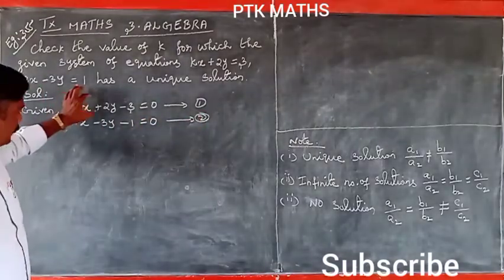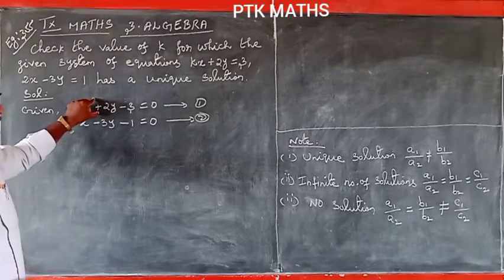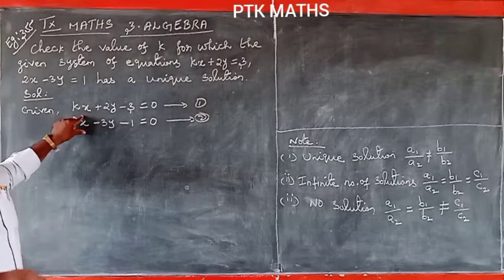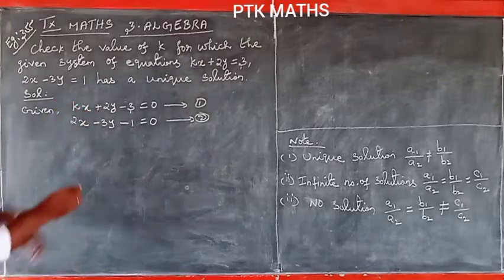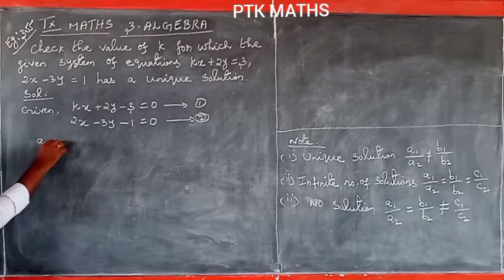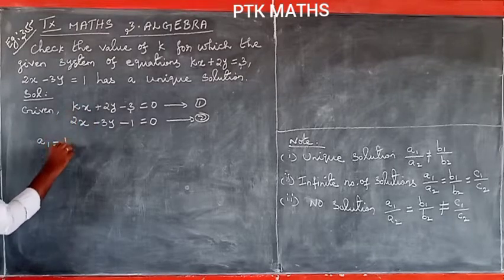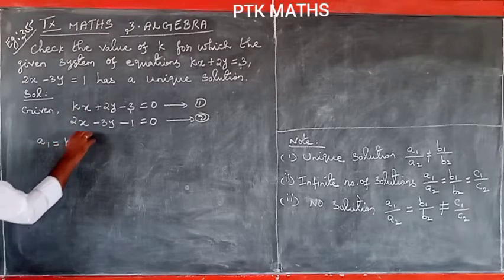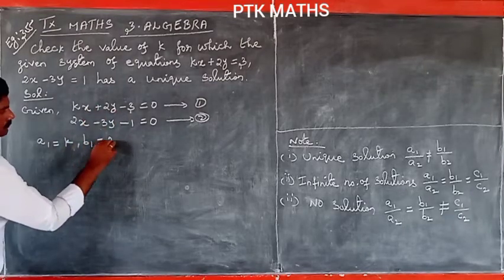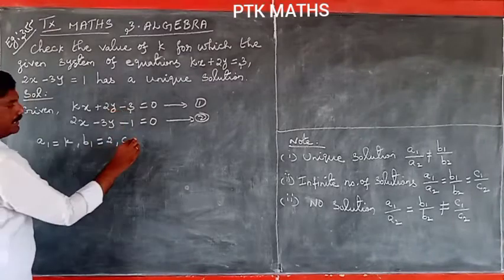From the first equation, we identify the coefficients: a1 is the coefficient of x, which is k. b1 is the coefficient of y, which is 2. c1 is the constant, which is 3, so c1 equals minus 3.